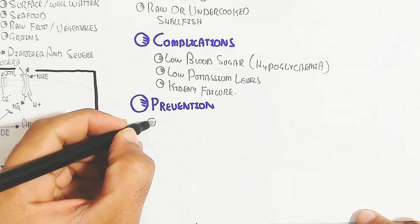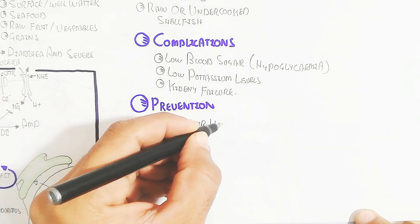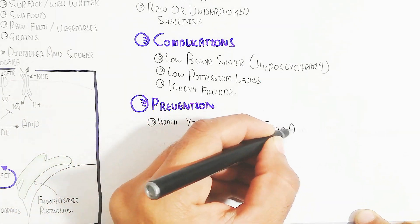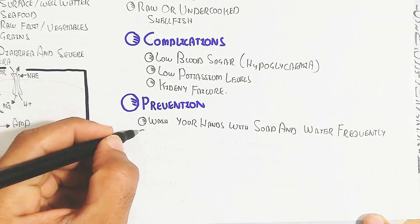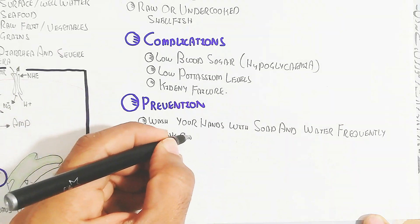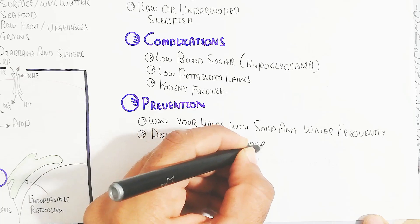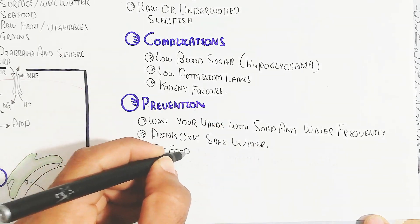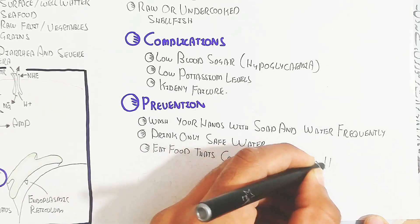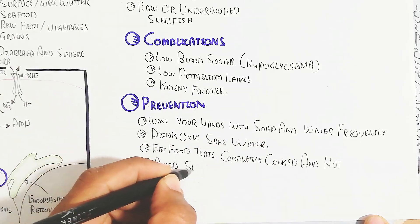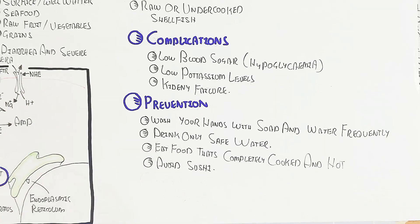Prevention methods include: wash your hands with soap and water frequently, drink only safe water, eat foods that are completely cooked and hot, and avoid sushi because sushi is a vector for cholera infection.